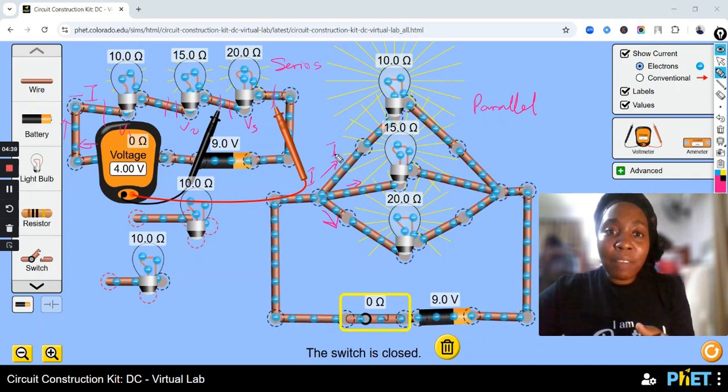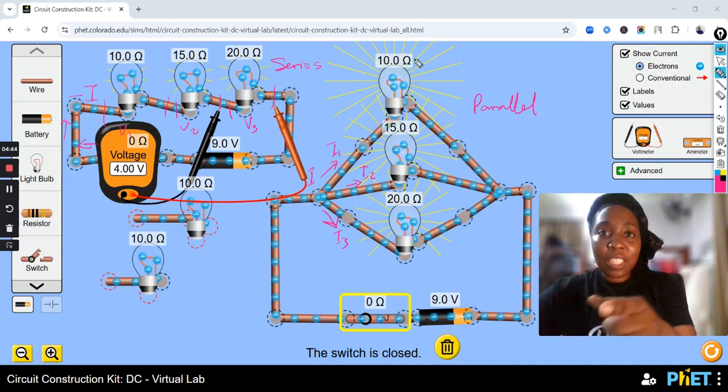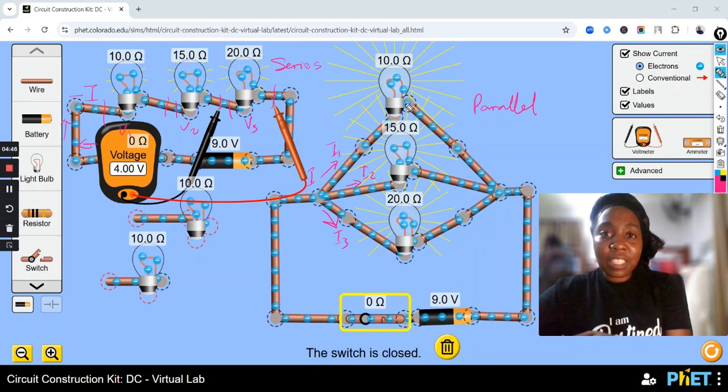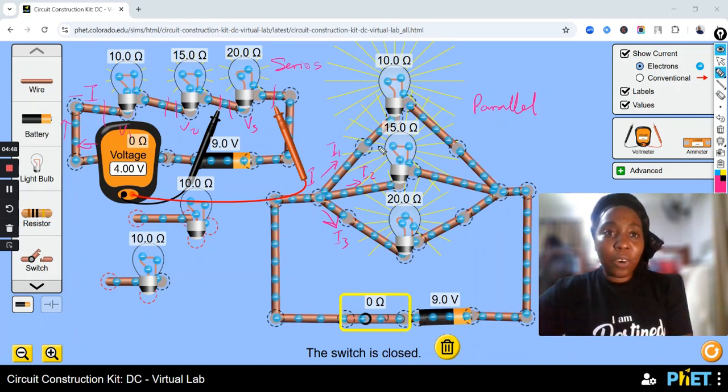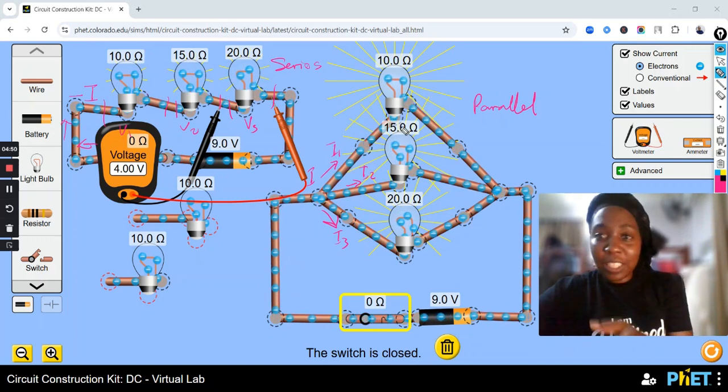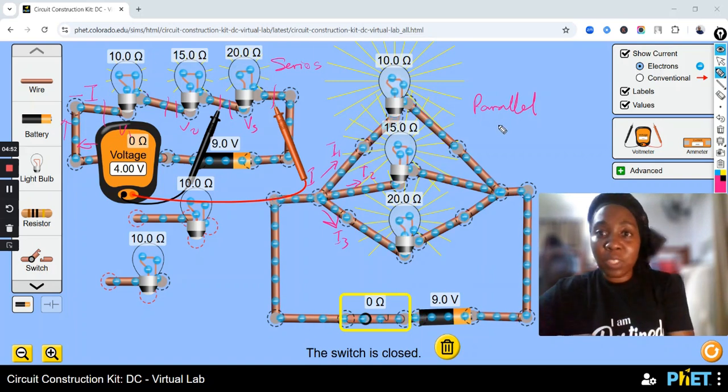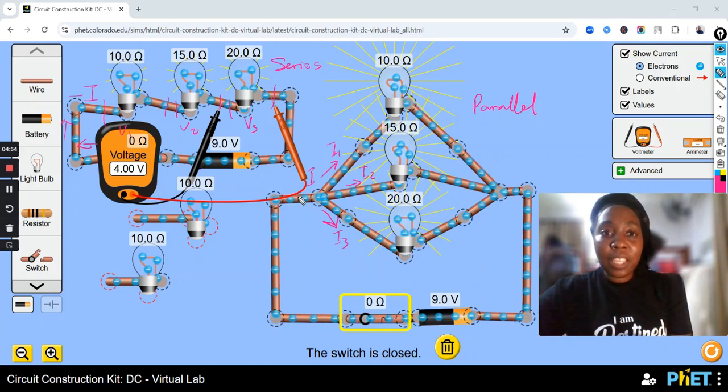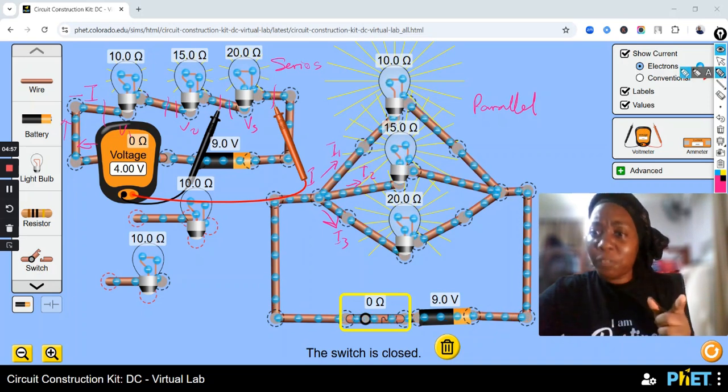Currents divide into 3. Current divides. So you have I1 here. You have I2 here. You have I3 here. You can see I still use the same resistance here on each of the bulbs to show you the difference between the series and parallel circuits. So the current is different. But what about the voltage?